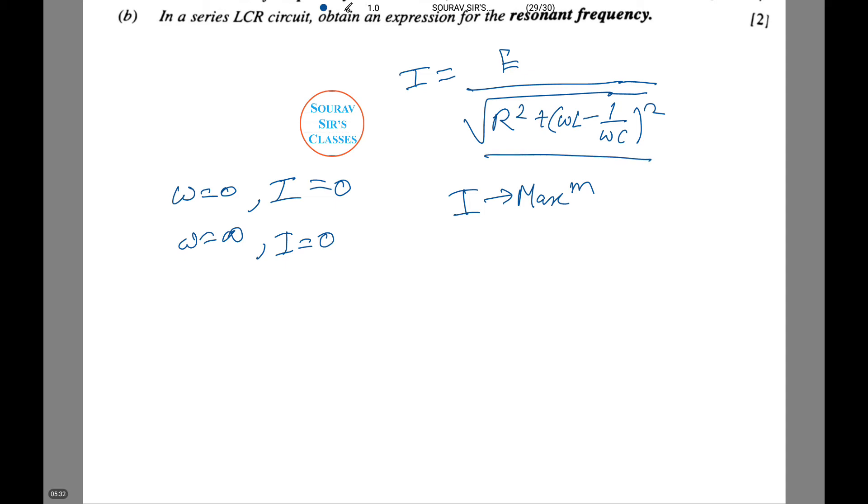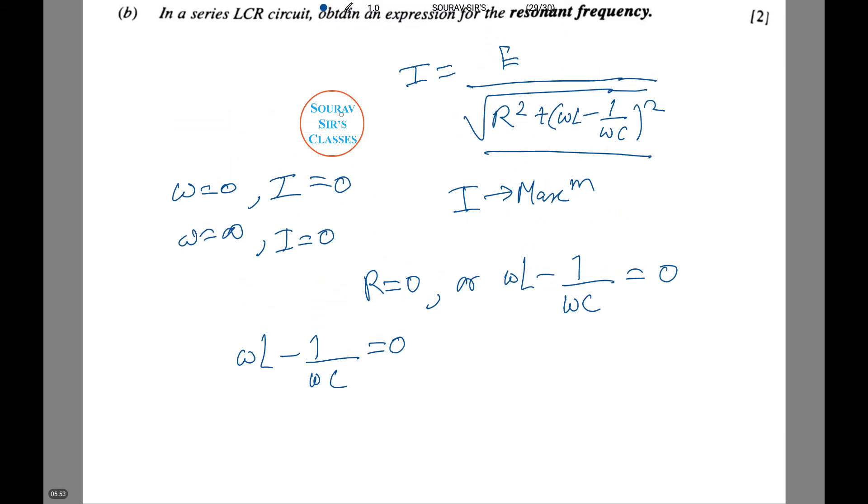For this either R equals to 0 or omega L minus 1 by omega C equals to 0. So when omega L minus 1 by omega C equals to 0, this is called resonance condition. Now we see what happens at resonance condition.